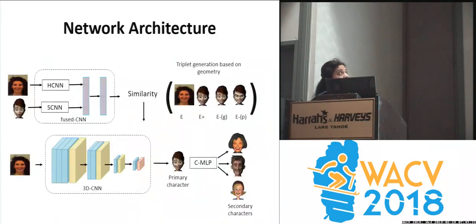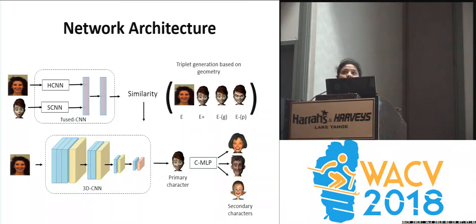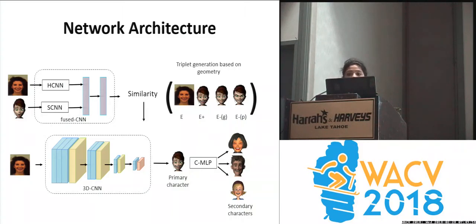Here is an overview of our network architecture. We've used standard neural network models without going into the details. The important thing to note is that we compute a similarity between human images and stylized character images, and then use this similarity to drive the stylized characters in 3D.